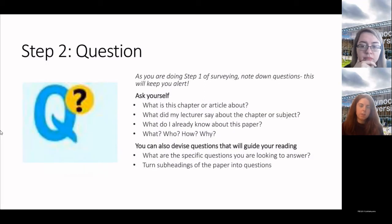The second step is to question. As you're doing step one of surveying, note down questions. This will keep you alert. For example, you could ask yourself, what is this chapter or article about? What did my lecturer say about the chapter or subject? What do I already know about this paper? You're asking questions like what, who, how and why. You can also devise questions that will guide your reading. What are the specific questions you were looking to answer and turn subheadings of the paper into questions? This is all dissecting the reading a bit further.